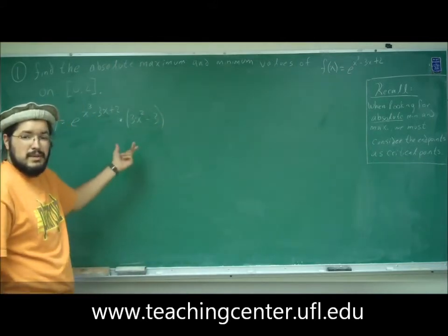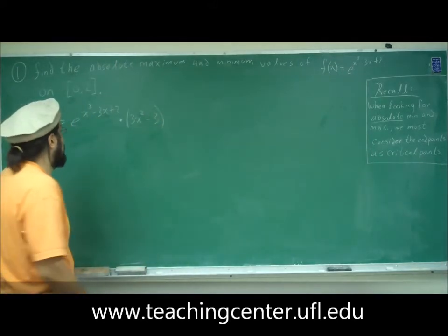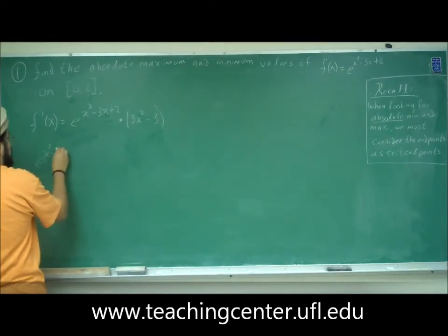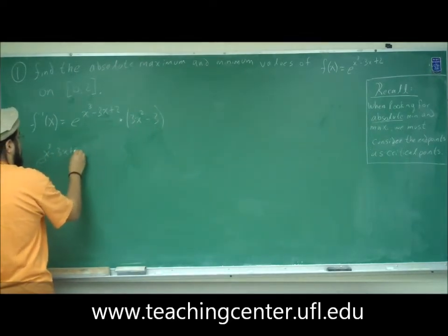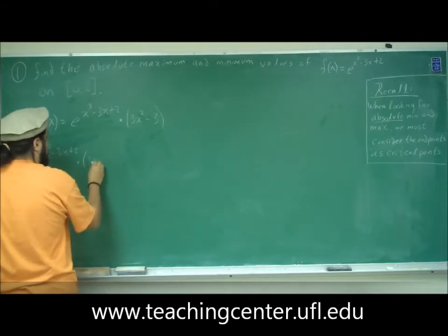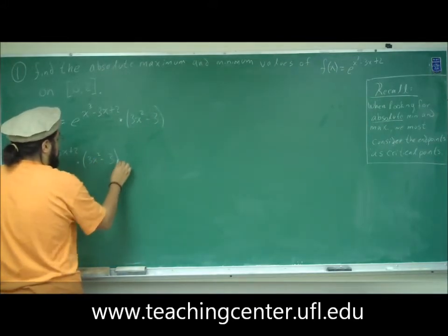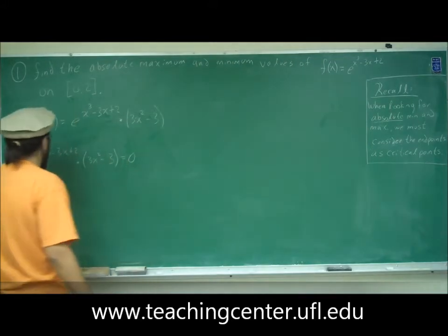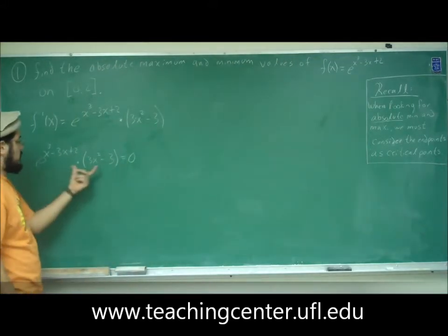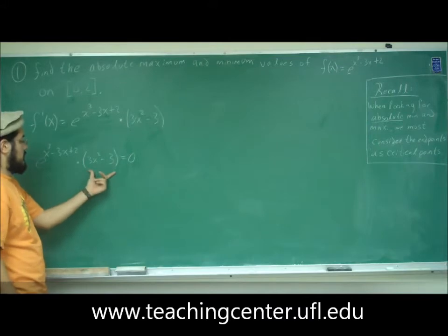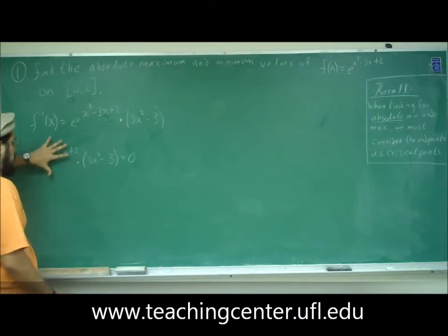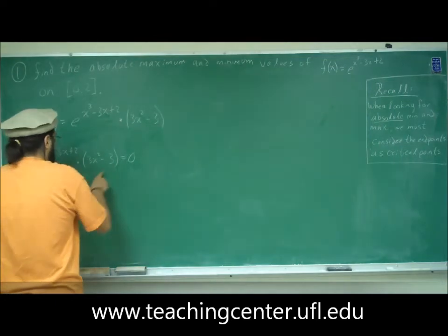Using the first derivative test, we set f'(x) equal to 0: e^(x³ - 3x + 2) · (3x² - 3) = 0. We have something times something equals 0, so either factor is 0. However, e to the anything can never be 0, so we ignore that part and concentrate on 3x² - 3 = 0.